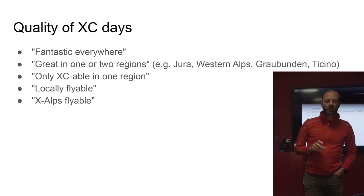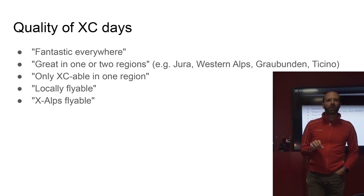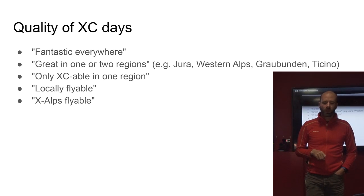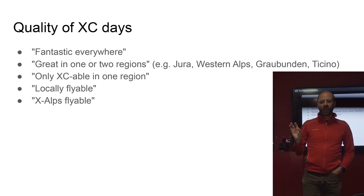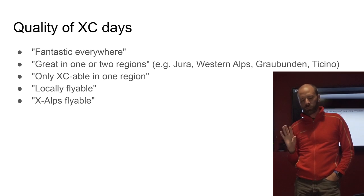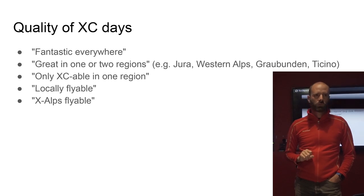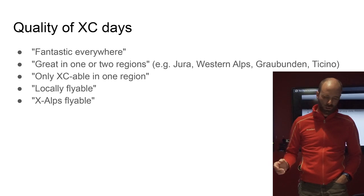The hard ones to forecast are when it's limited — where in Switzerland is it good? Should I go to the Alps or Ticino this weekend? In extreme cases there might be just one area that's flyable, then you get locally flyable, and of course XAlps flyable. It's the stuff in the middle — trying to work out which part of Switzerland will only be XC-able in one or two regions — those are the more difficult days to forecast.